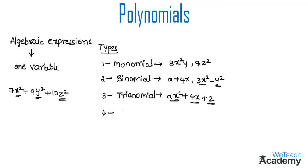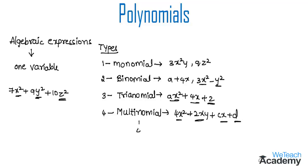A multinomial is an expression that contains 4 or more algebraic terms. For example, consider the expression 4x squared plus 2x squared plus 2xy plus cx plus d. Since this expression contains 4 or more algebraic terms, we call it a multinomial expression.